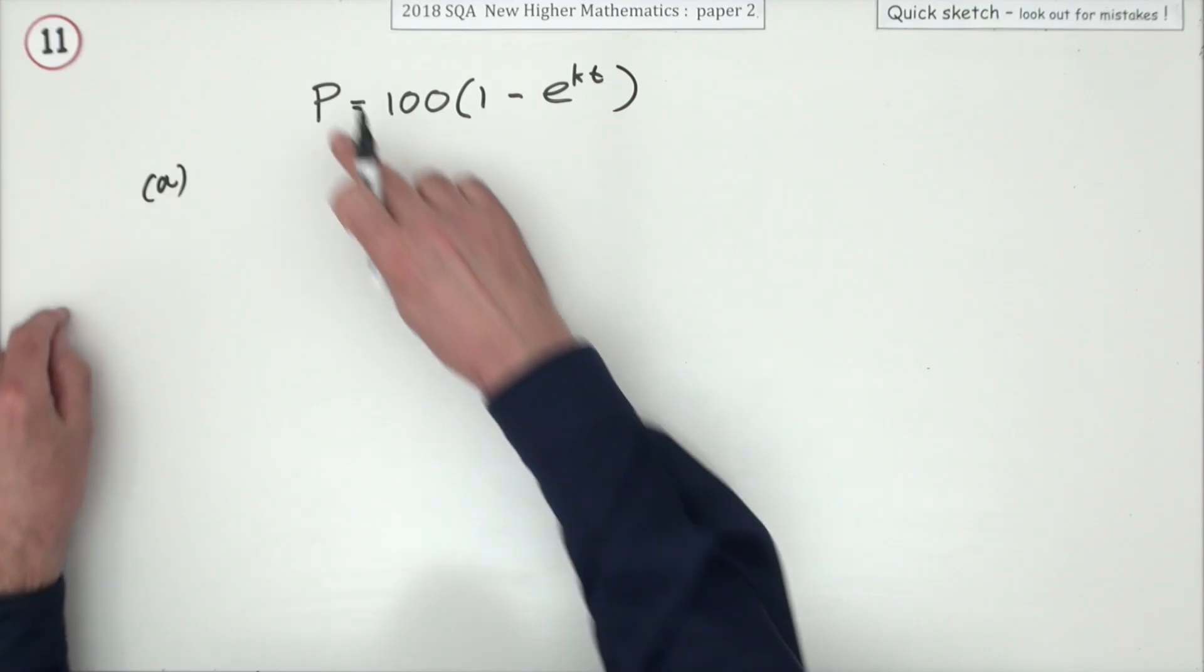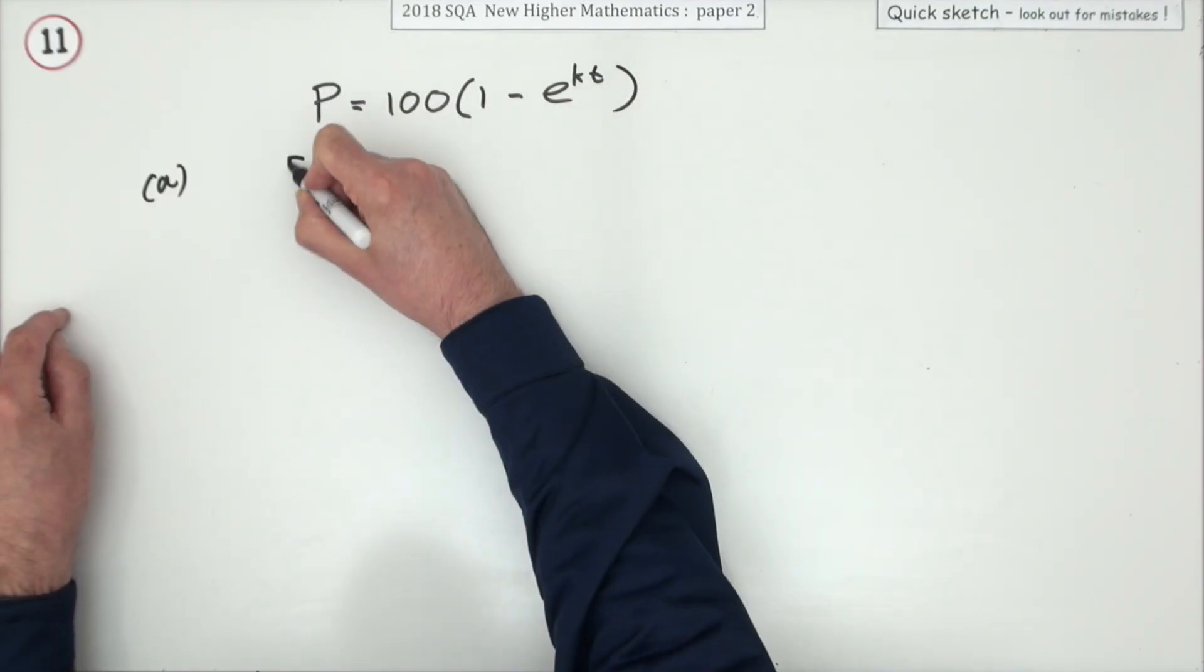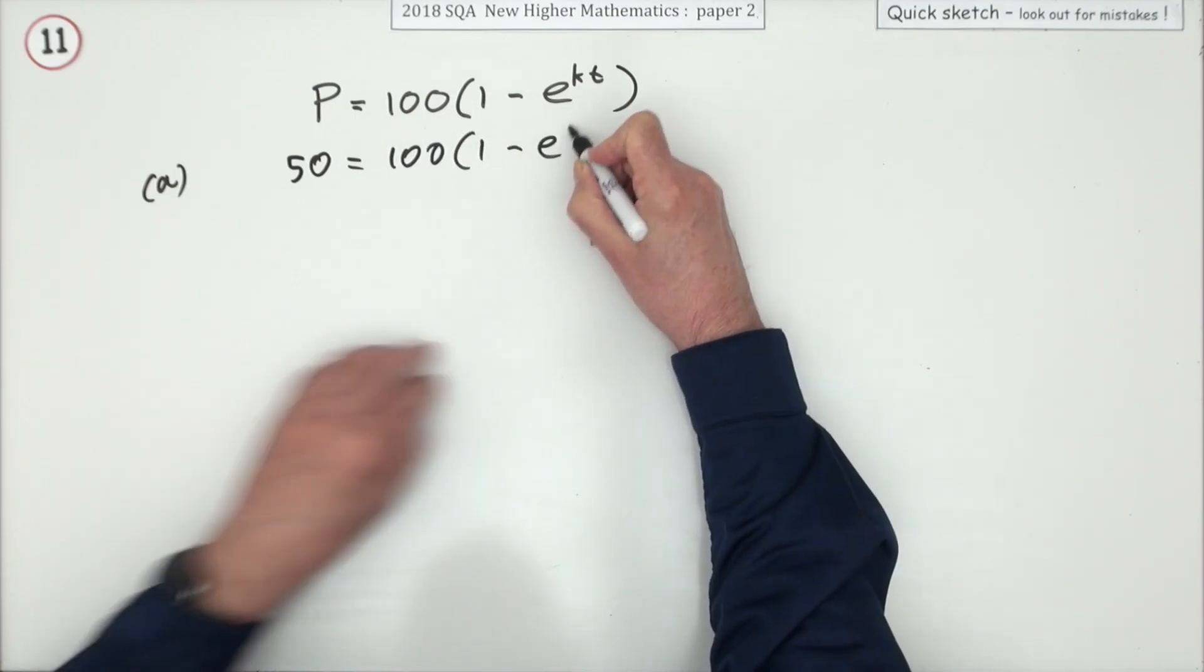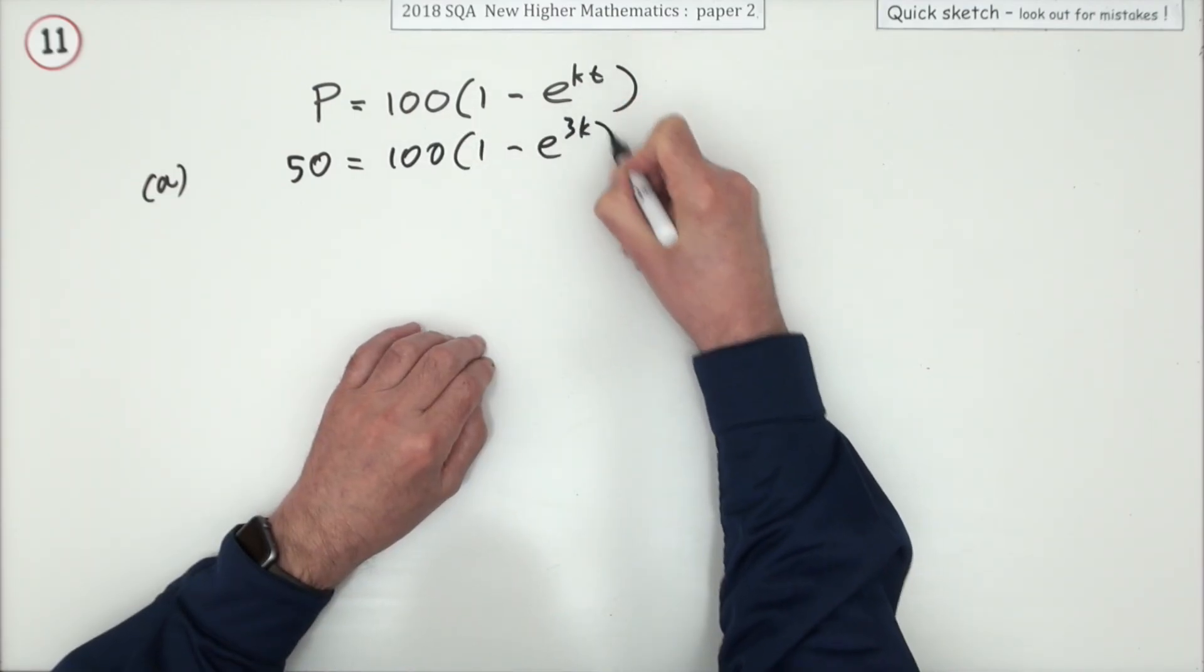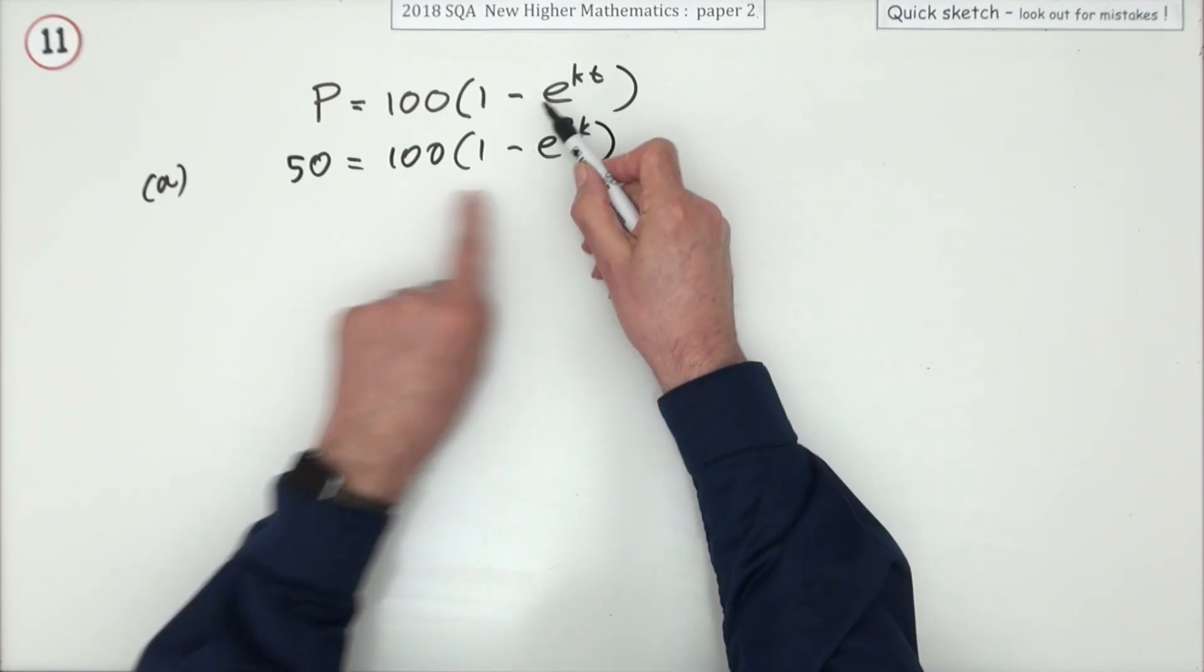If 50%, in other words when t is 3, P should be 50. So 50 = 100(1 - e^3k). I suppose that'll be the first mark for putting that in.